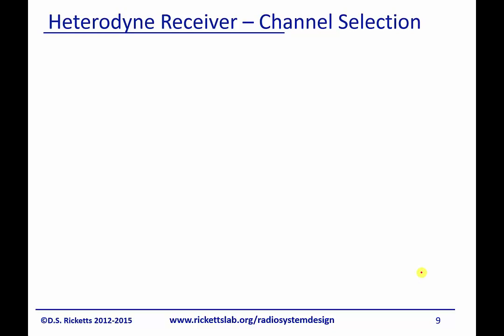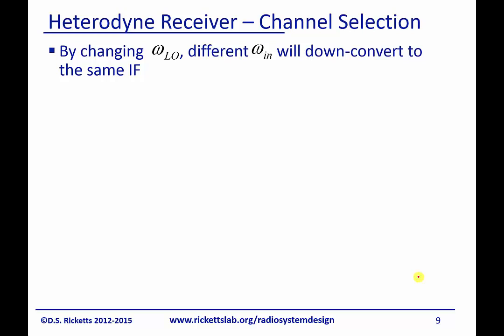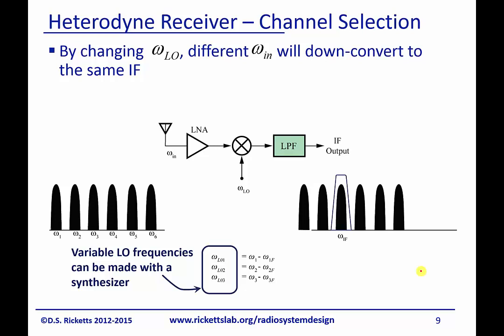We'll talk about channel selection with a filter. By changing the LO, different omega-ins will be down-converted to the same frequency. Looking on the left, here's our band with multiple channels. The idea is that we can receive each one of these channels with a fixed filter by making the LO variable.